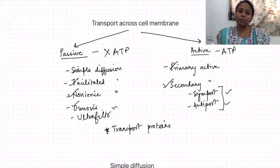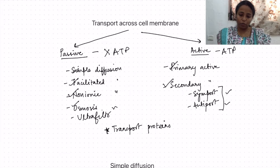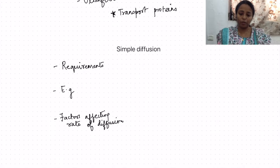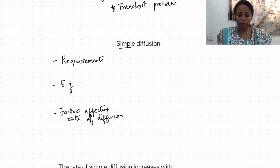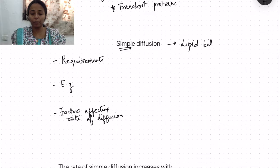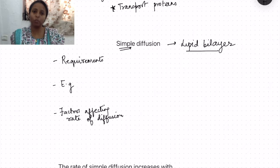Let us quickly see what are the characteristics of these types of transport mechanisms, and then we will solve some MCQs. In simple diffusion — remember the word 'simple' — it happens across the lipid bilayer. The cell membrane has both lipids and proteins, but when the molecule moves through the lipid bilayer, it is known as simple diffusion.